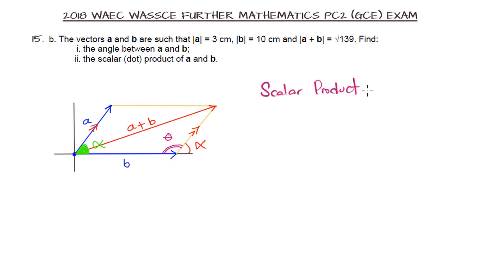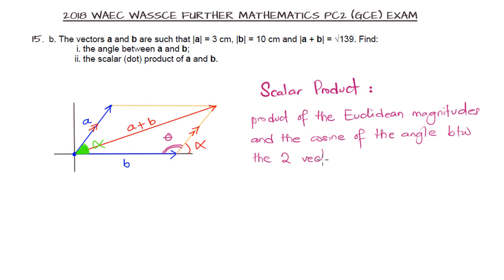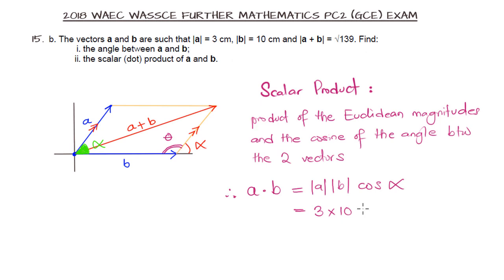Now we are asked to find the dot product of vectors a and b. The scalar or dot product is defined as the product of the magnitudes and the cosine of the angle between the two vectors. So a dot b equals magnitude of a times magnitude of b times cos of the angle between them. The angle is 60 degrees, and the magnitudes give 3 times 10 equals 30. So we have 30 times cos 60, and cos 60 is 0.5, giving 30 times 0.5 equals 15.